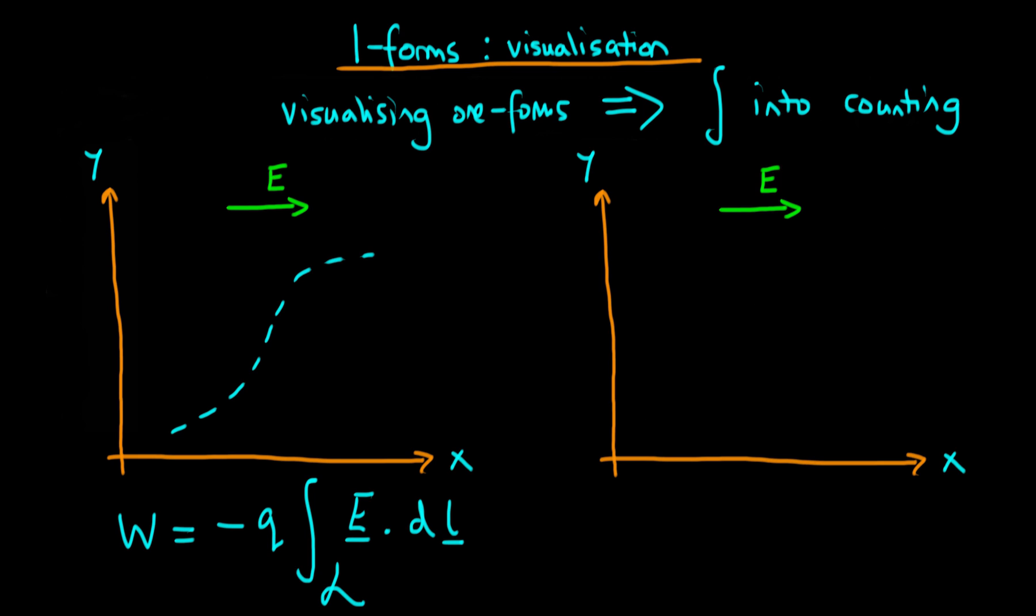In the vector way of thinking about things, what we do at each point in the field is we take the dot product between the electric field, which is a uniform field in the x direction, and the differential line element dl. We work out the proportion of the electric field which is aligned with the differential line element dl.